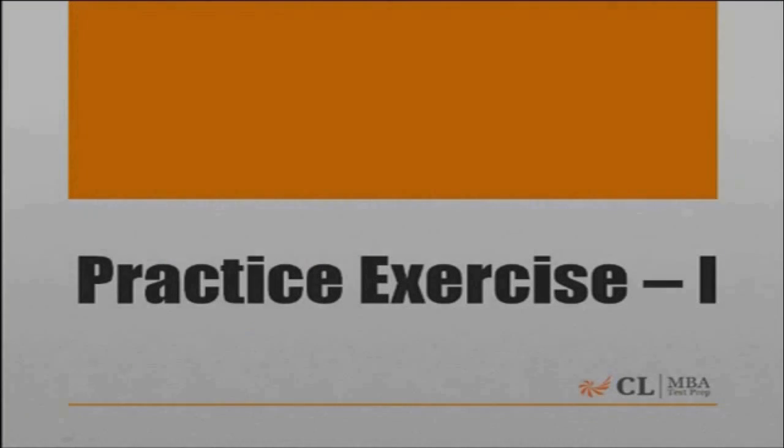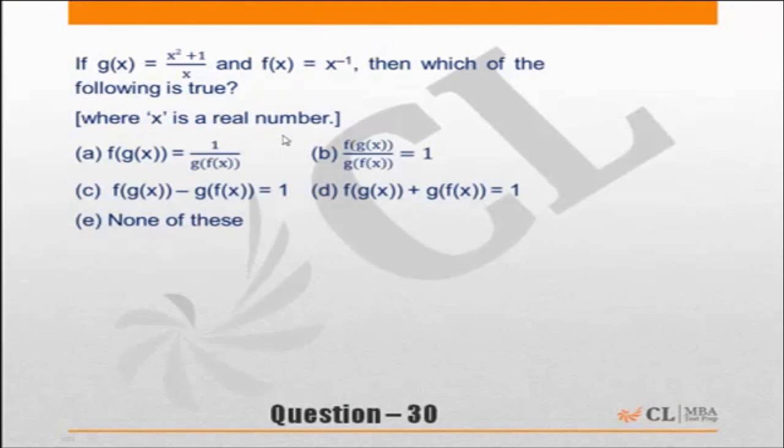Let us move to the first exercise, Question 30. g of x is equal to x squared upon x plus 1, and f of x is equal to x to the power minus 1. Which of the following is true?